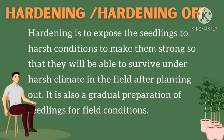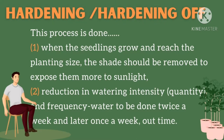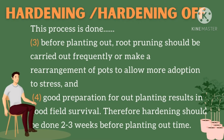Hardening and hardening off is the process of exposing transplants gradually to outdoor conditions. It is preparing developed seedlings by exposing them to sunlight in order for them to adjust to weather conditions, giving the seedling time to adapt to the environment. This process is done when the seedlings grow and reach planting size — the shade should be removed to expose them more to sunlight. Also, reduce the intensity, quantity, and frequency of watering. Before planting out, root pruning should be carried out frequently or pots rearranged to allow more adaptation to stress.